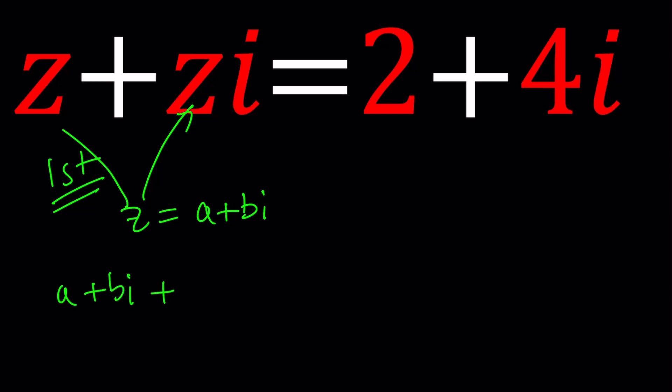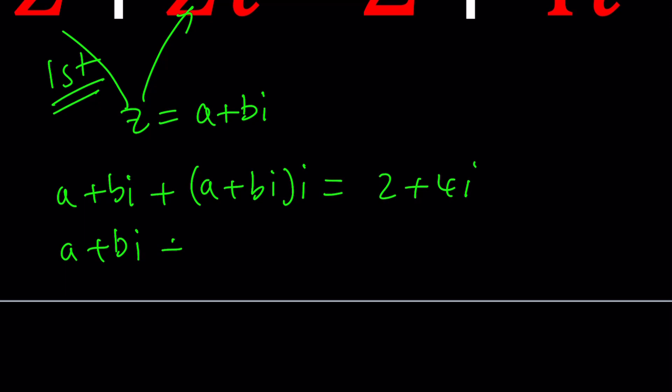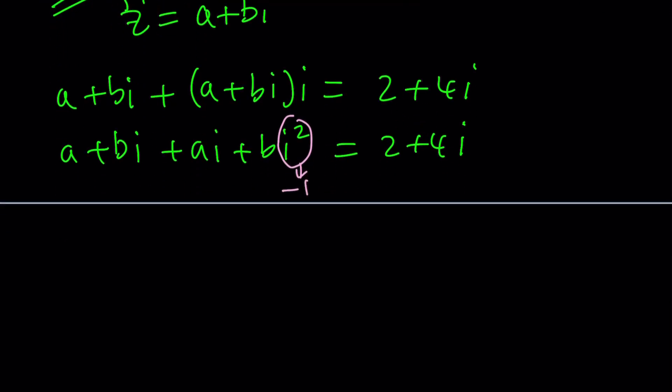A plus bi plus a plus bi times i equals 2 plus 4i. Now let's go ahead and distribute. A plus bi plus ai plus bi squared equals 2 plus 4i. Remember, i squared comes up a lot, and it's always equal to negative 1. That's one thing that you should never ever forget with complex numbers. It's a special number, and why are complex numbers important? Because we can solve equations that give us the square of a number being equal to negative 1, or any negative number for that purpose. That's not the only purpose of complex numbers. There's a lot of applications. Hopefully we'll talk about those later. Anyway, so this becomes a negative b.